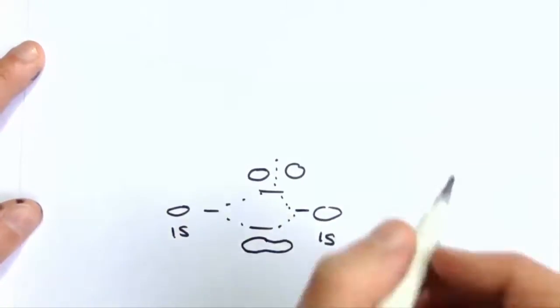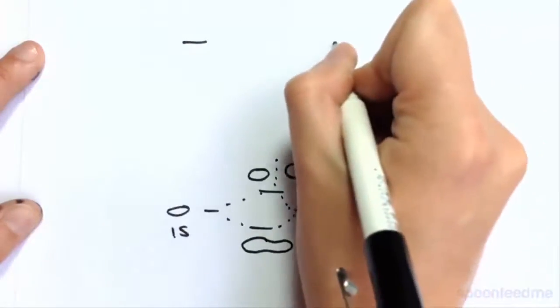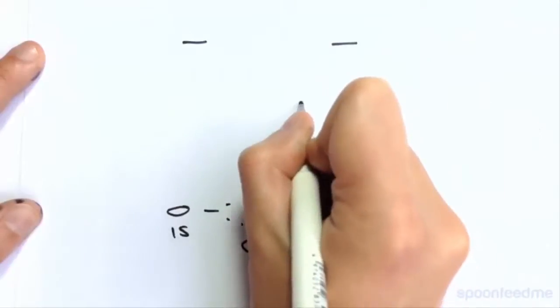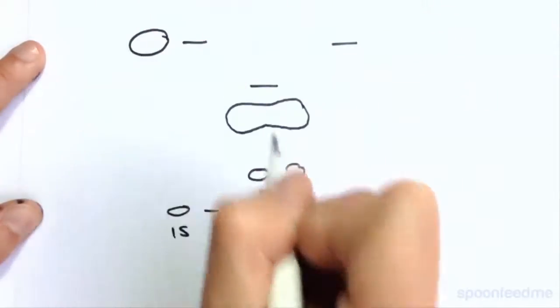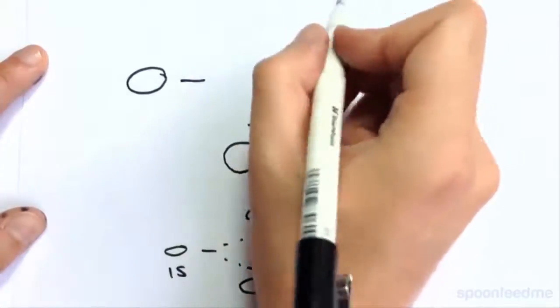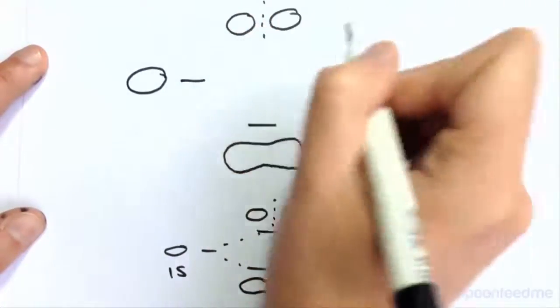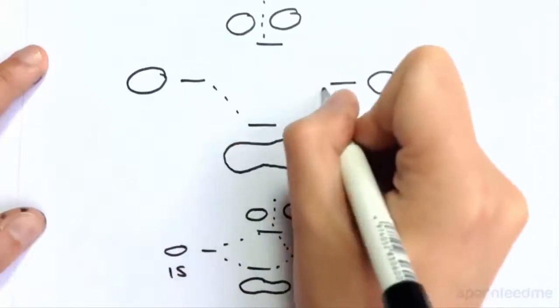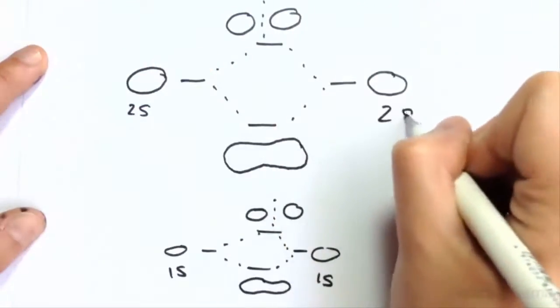We then have our 2s orbitals up here. We can represent the fact that 2s orbitals are slightly bigger by drawing them slightly bigger.